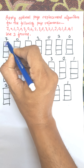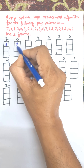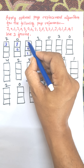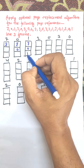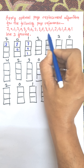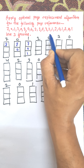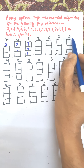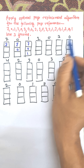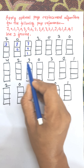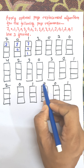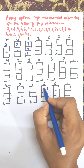First, 7 will be loaded, then 7 0, then 7 0 1. When 2 arrives, we replace among 7, 0, and 1 whichever will not be used for the longest period of time. We need to look ahead from position 2 — 0 is available here, 1 is available here, and 7 is the last value — meaning 7 will be replaced.